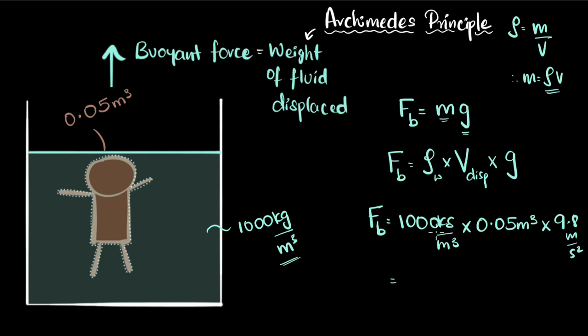And we can simplify this. If I multiply 1000 times 0.05, I get 50 times 9.8. And that gives me 490. And the units of force would be newtons. And there we go. That is the buoyant force acting on this. And how did we calculate it? By using Archimedes principle.